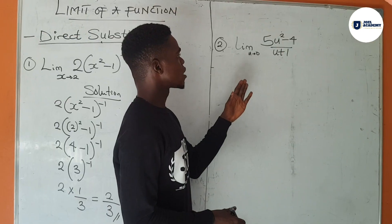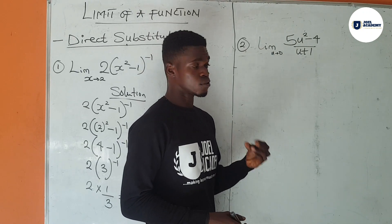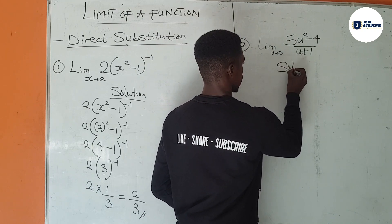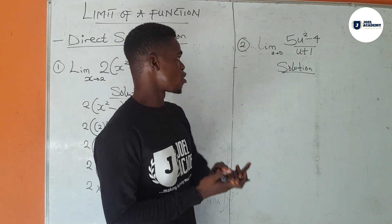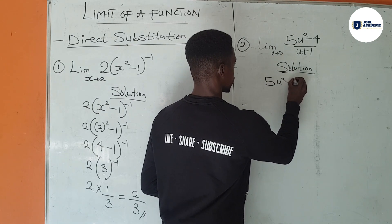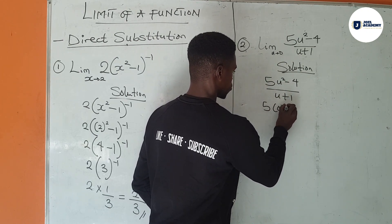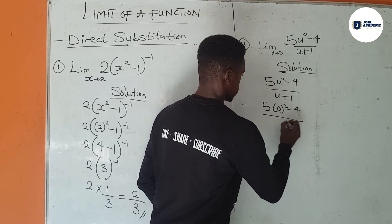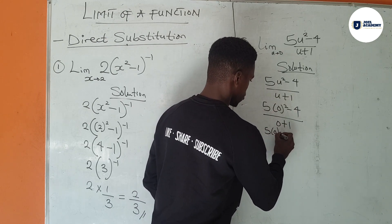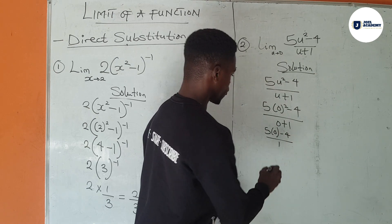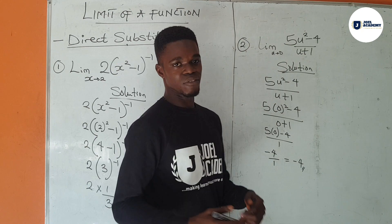The second question: find the limit of (5u squared minus 4) all over (u plus 1) as u tends to 0. Solution: same approach — wherever we see u, we replace it with 0. So we have (5 times 0 squared minus 4) over (0 plus 1), which gives us (0 minus 4) over 1, which is minus 4 over 1. Our answer is minus 4. This is very simple.